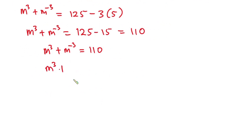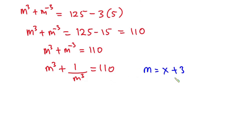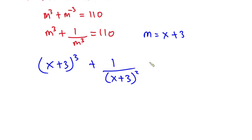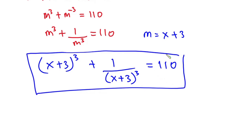Don't forget that we let m equal x+3. So this equation becomes (x+3)³ + 1/(x+3)³ equals 110. That is our final answer. I hope you found this video useful — please give it a thumbs up, subscribe to this channel, and thanks for watching. See you in the next video!